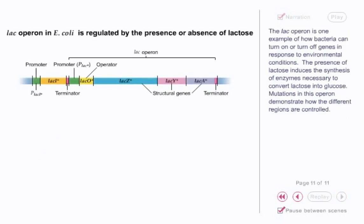The lac operon is one example of how bacteria can turn on or turn off genes in response to environmental conditions. The presence of lactose induces the synthesis of enzymes necessary to convert lactose into glucose. Mutations in this operon demonstrate how the different regions are controlled.